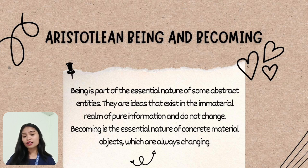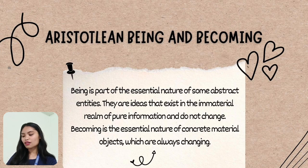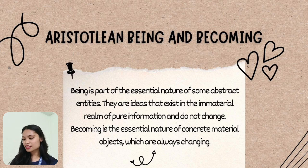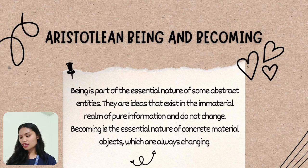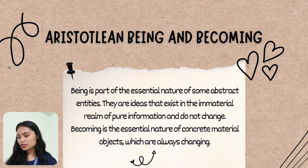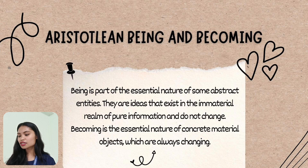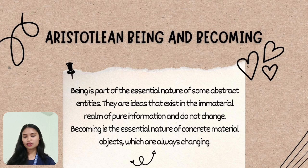The efficient cause is the process or activity by which a thing is set into motion or brought to rest — it is the mover that causes things to be or happen. For example, the carpenter is the efficient cause of the table. The final cause is the end goal of the object, or what the object is good for. For example, a table's final cause is to be used as a place to put food or other things on.